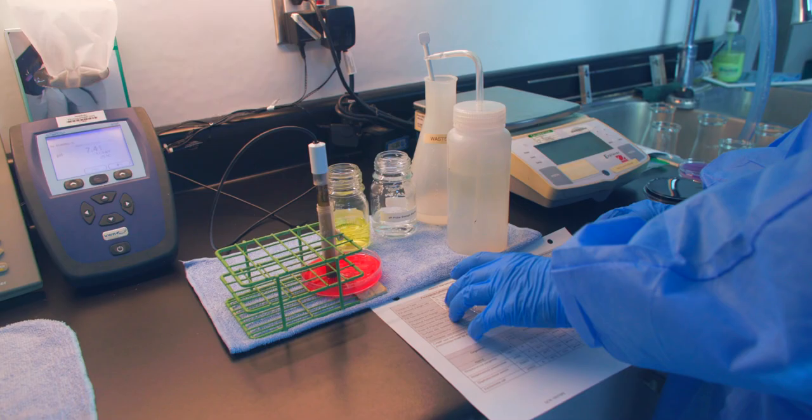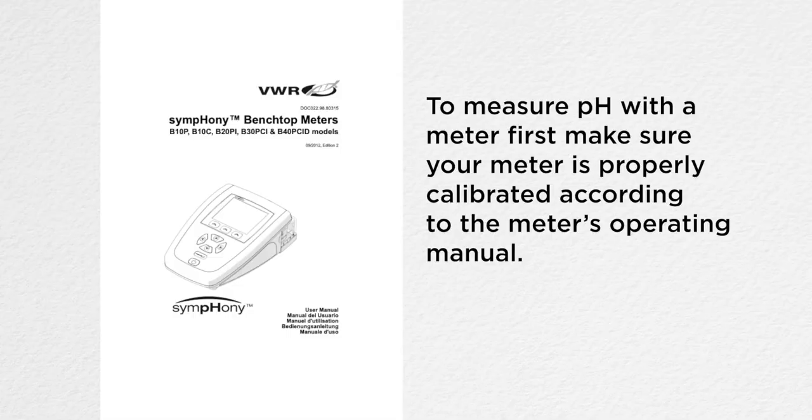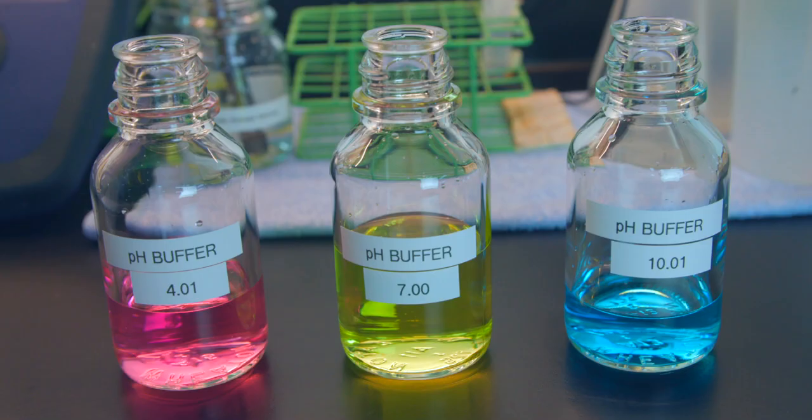To measure pH with a meter, first make sure your meter is properly calibrated according to the meter's operating manual. Use color-coded buffers of fixed pH. pH 4.01, pH 7.00, and pH 10.01 are examples of buffers that are typically used.